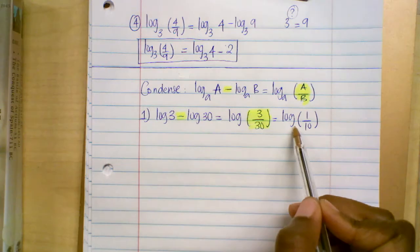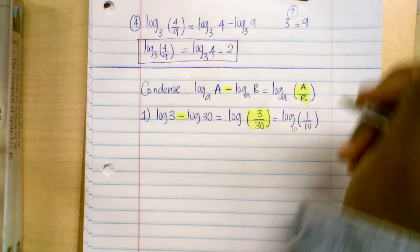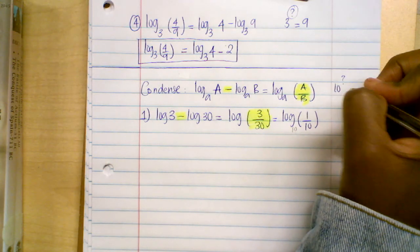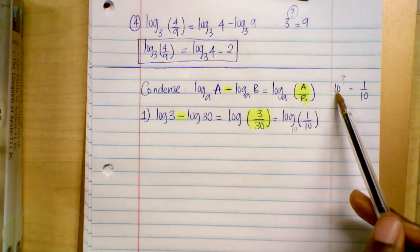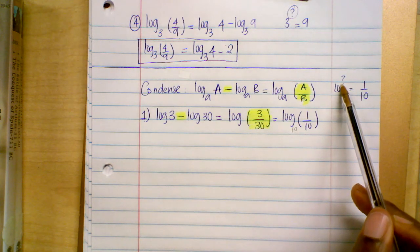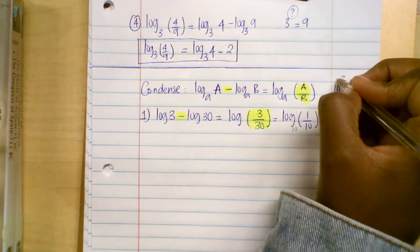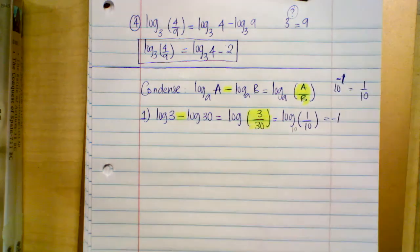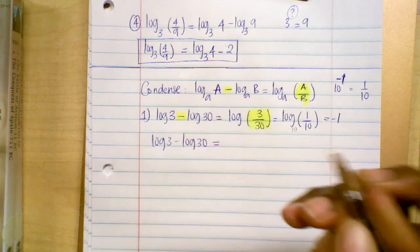Remember, if you don't see the base, always assume the base is 10. The common log of one over ten asks: what exponent do you give to base ten so that the answer is one over ten? One over ten is the reciprocal of ten, so the exponent must be negative one. Therefore, the common log of three minus the common log of 30 equals negative one.